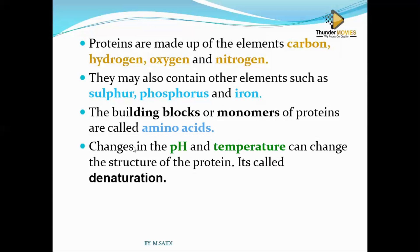Proteins have a property that if you change the pH and temperature, they will also change. If you put a protein in an acidic medium when it is supposed to be in an alkaline medium, it will be denatured — it will change in nature. We call this denaturation. If a protein is supposed to be at an optimum temperature and you increase it above that optimum temperature, it is going to change its structure. We say it has been denatured or has undergone denaturation.